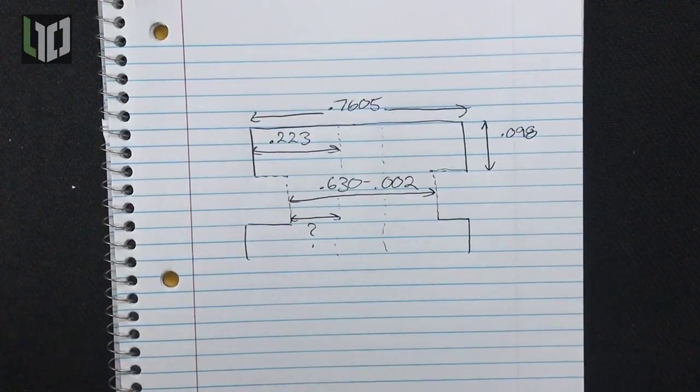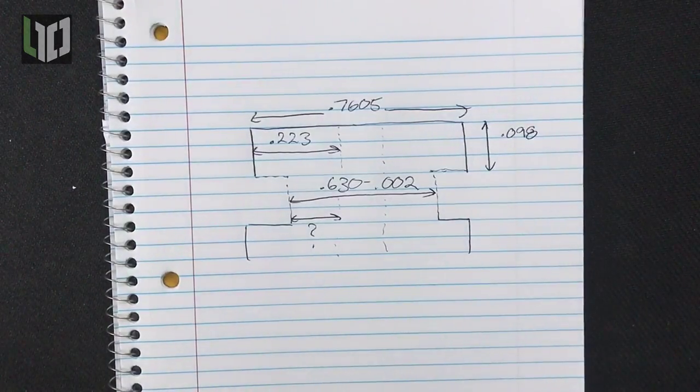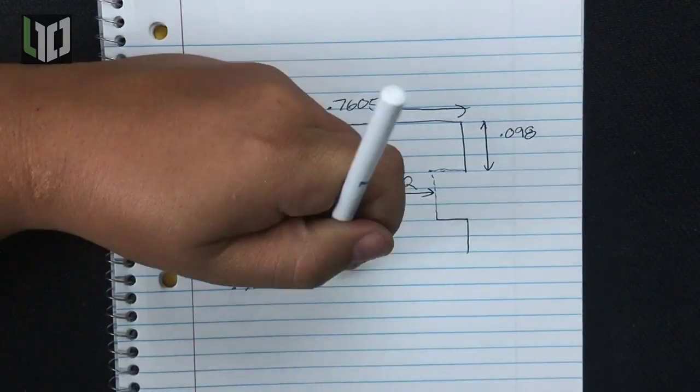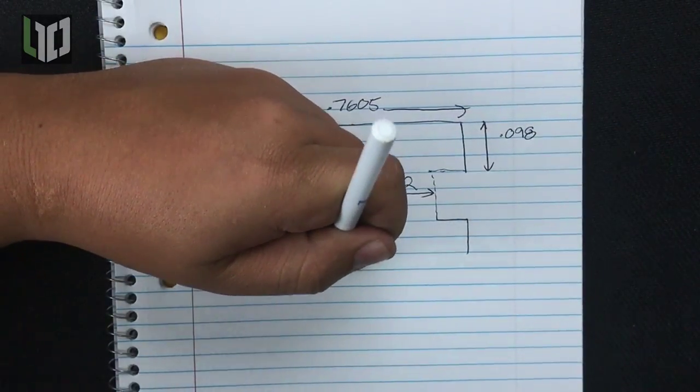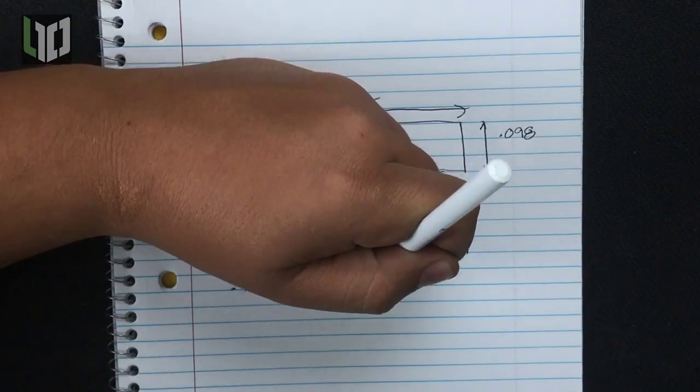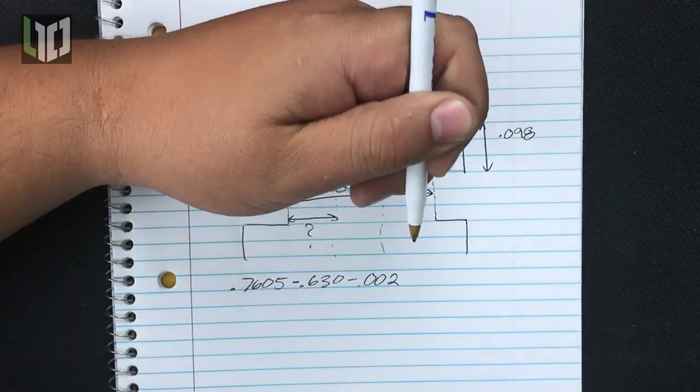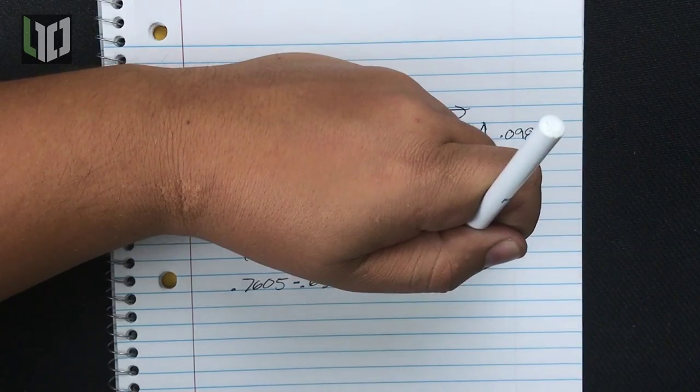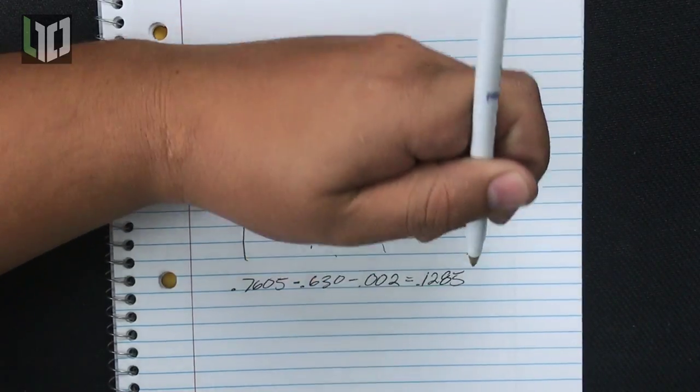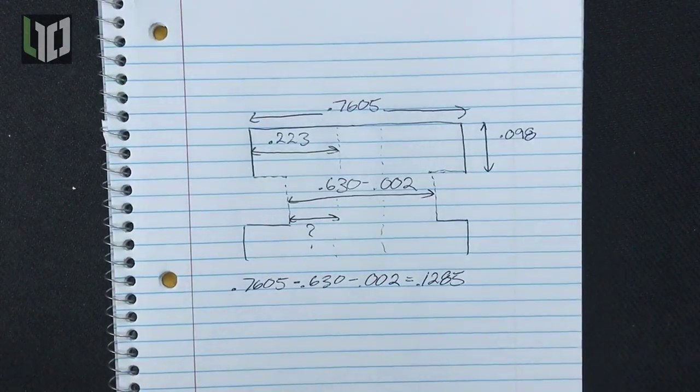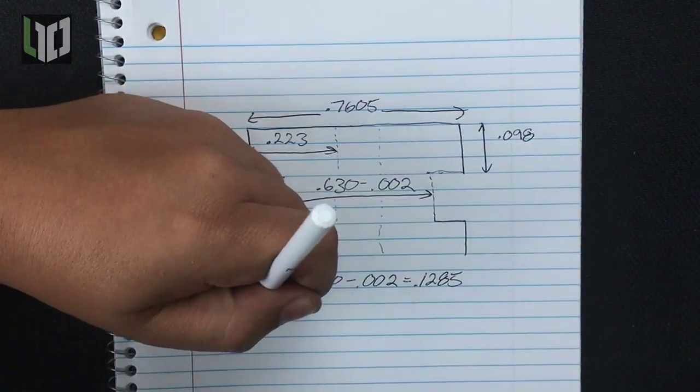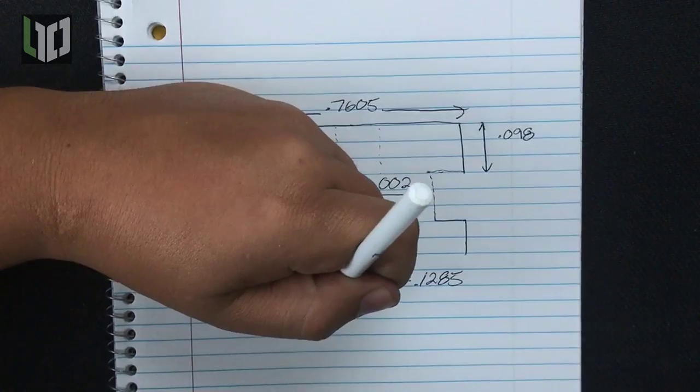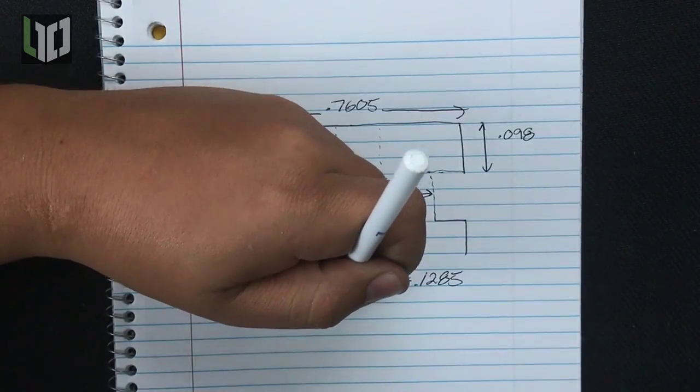First let's figure out how much material will be removed from both frame grooves combined. We start with a frame rail width of 0.7605 and we are targeting 0.630 measured from the slide and an additional two thousandths for clearance. This gives us 0.1285 total removed from the frame. Since we want to know how much per side needs to be removed we simply divide that number by two. I end up with about 64 thousandths here.